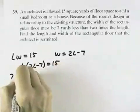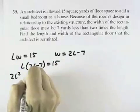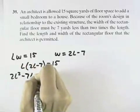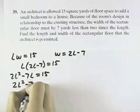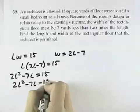That means 2L squared minus 7L equals 15. Or bringing the 15 over, we have 2L squared minus 7L minus 15 equals 0.